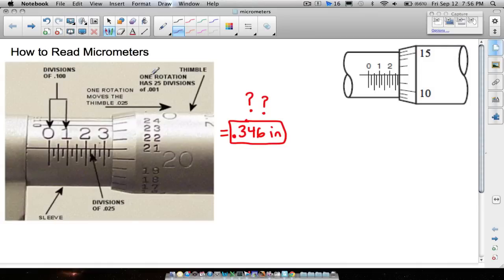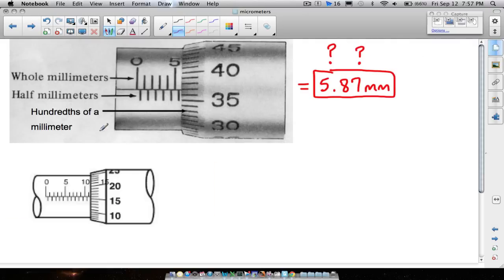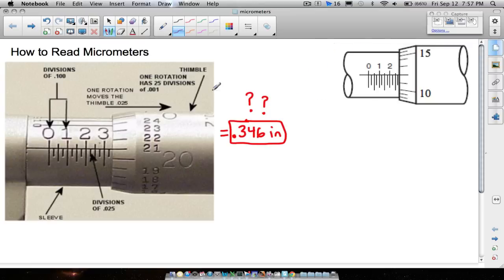In this video we're going to look at how to read two different types of micrometers. One of them is going to be in terms of an inch, that's this first one right here, and then the second micrometer that we're going to read is going to be in millimeters. So we're looking at a US measurement and a metric measurement. And this particular micrometer is capable of measuring up to the nearest thousandth of an inch. Notice you have three decimal places, and I'm going to show you how to get this number from this micrometer right here.